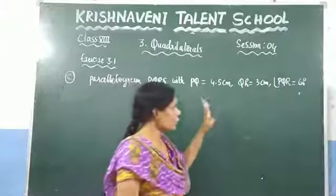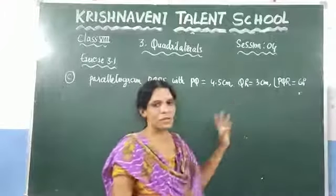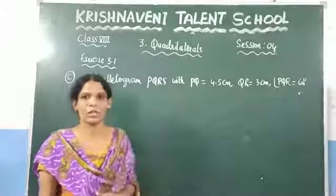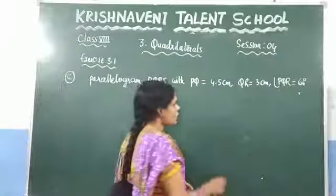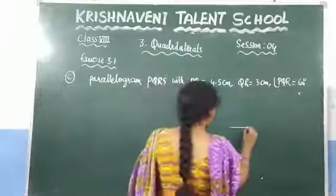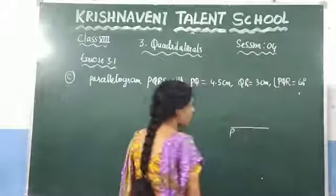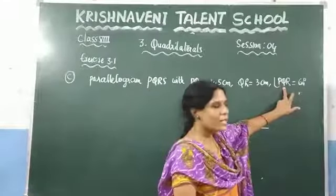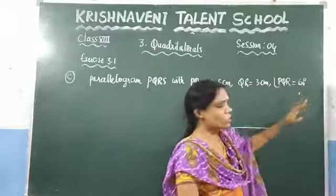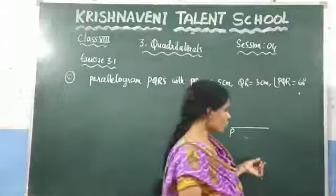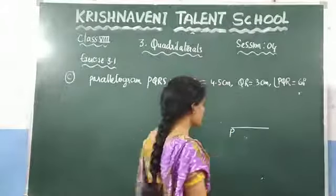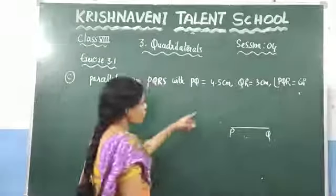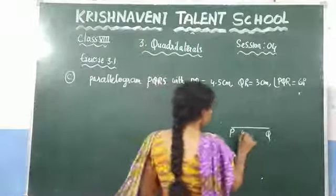In this exercise, we have 4 sides and 1 angle given. Before drawing, you need to draw the rough sketch PQR. The angle Q is given, so you need to take Q at the base. I am taking PQ as the base, and the length of PQ given here is 4.5 cm.